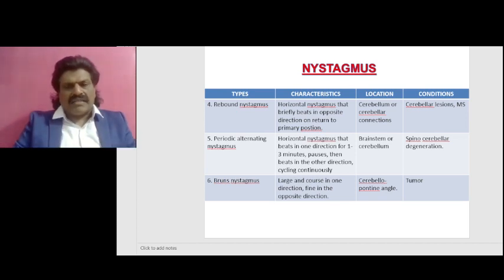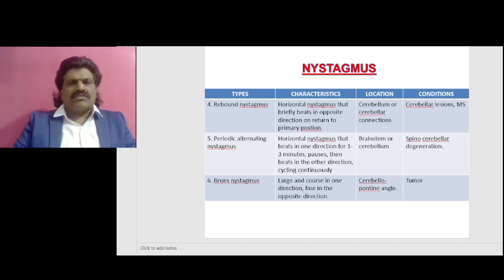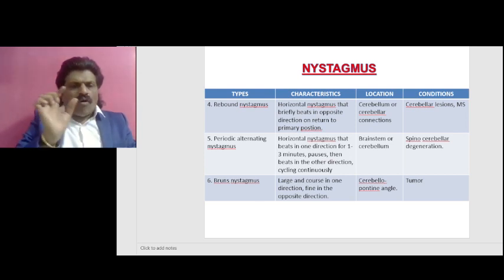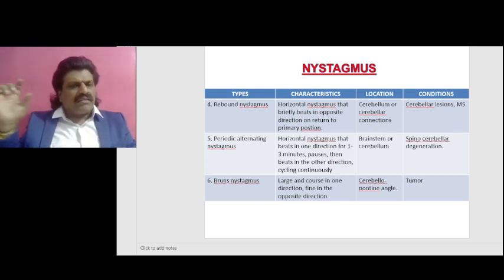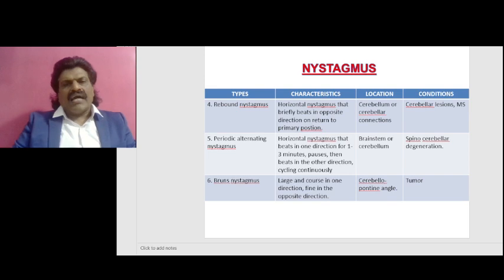Then there is Bruns nystagmus, which is characteristically large and coarse in one direction, and fine in the opposite direction. We characteristically see this at the cerebellopontine angle location, the condition being a cerebellopontine angle tumor.